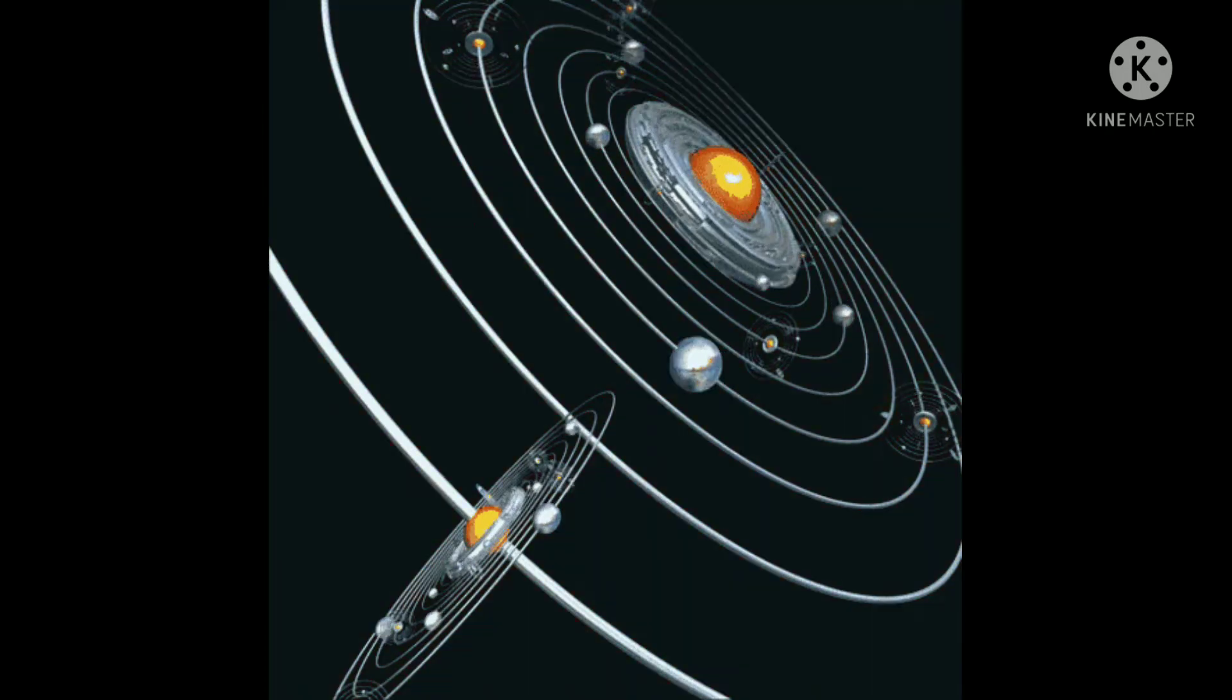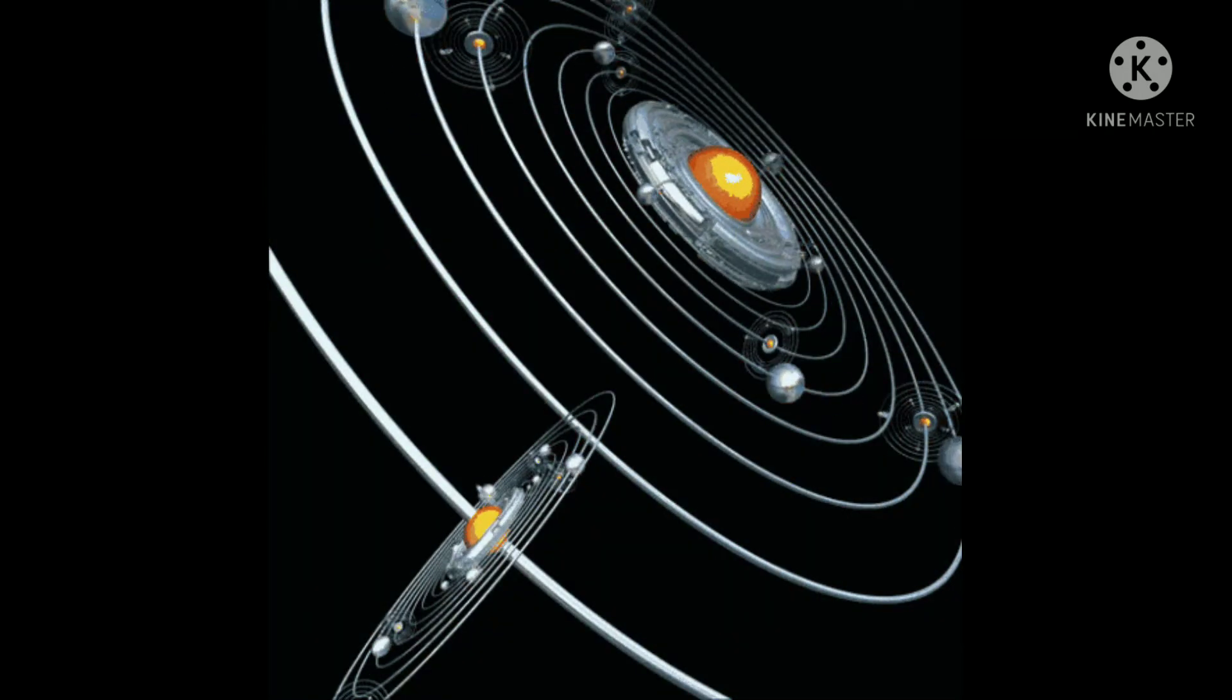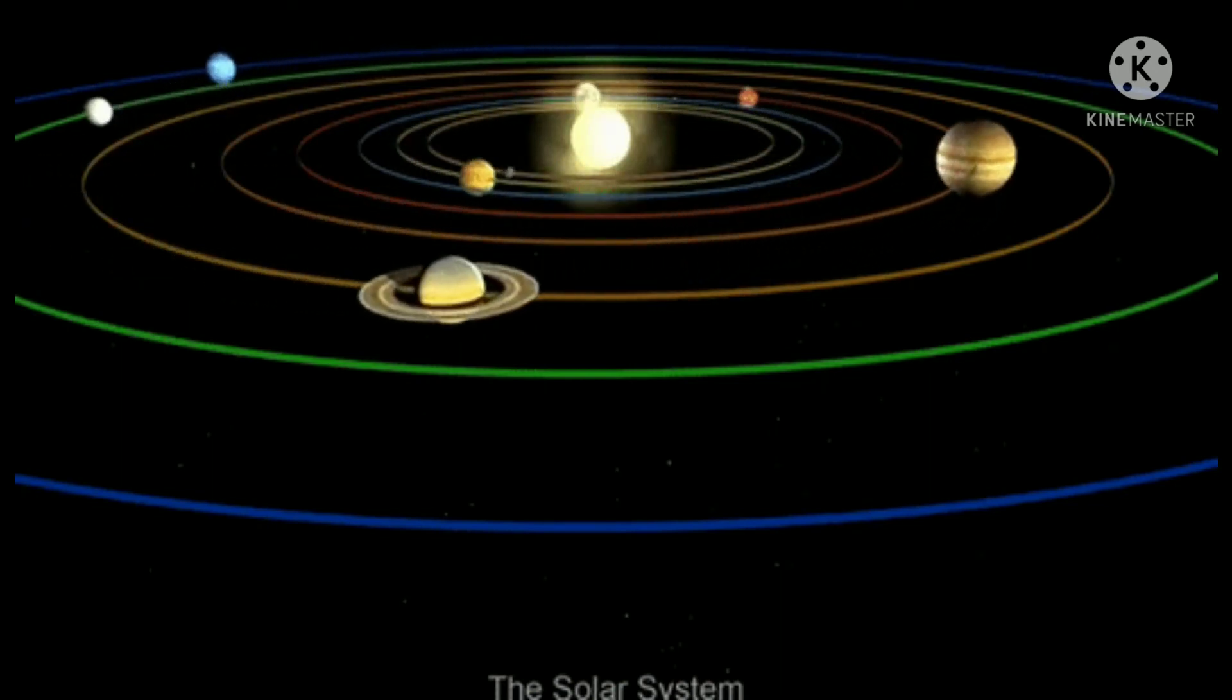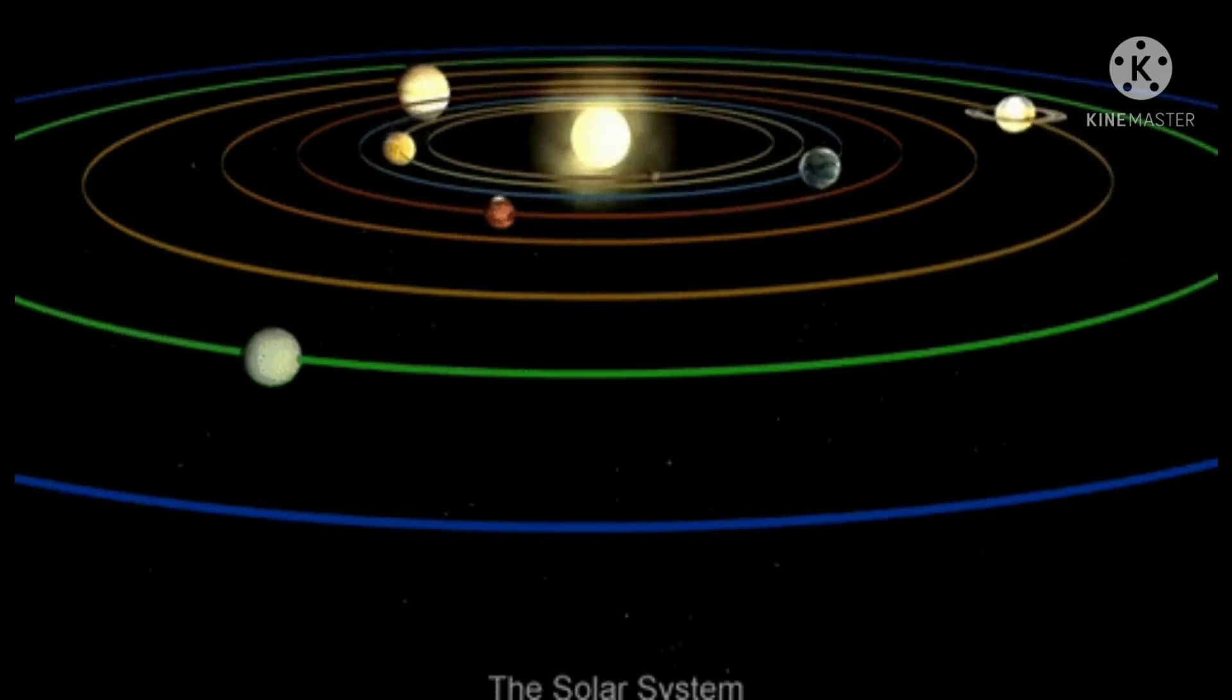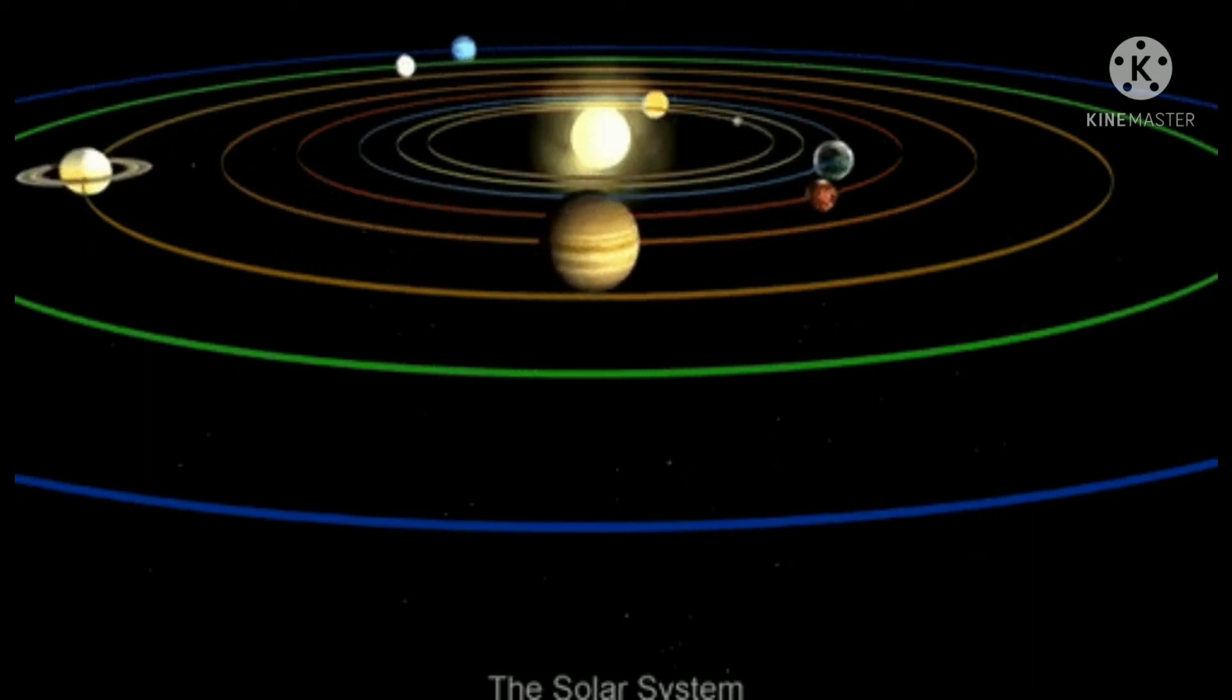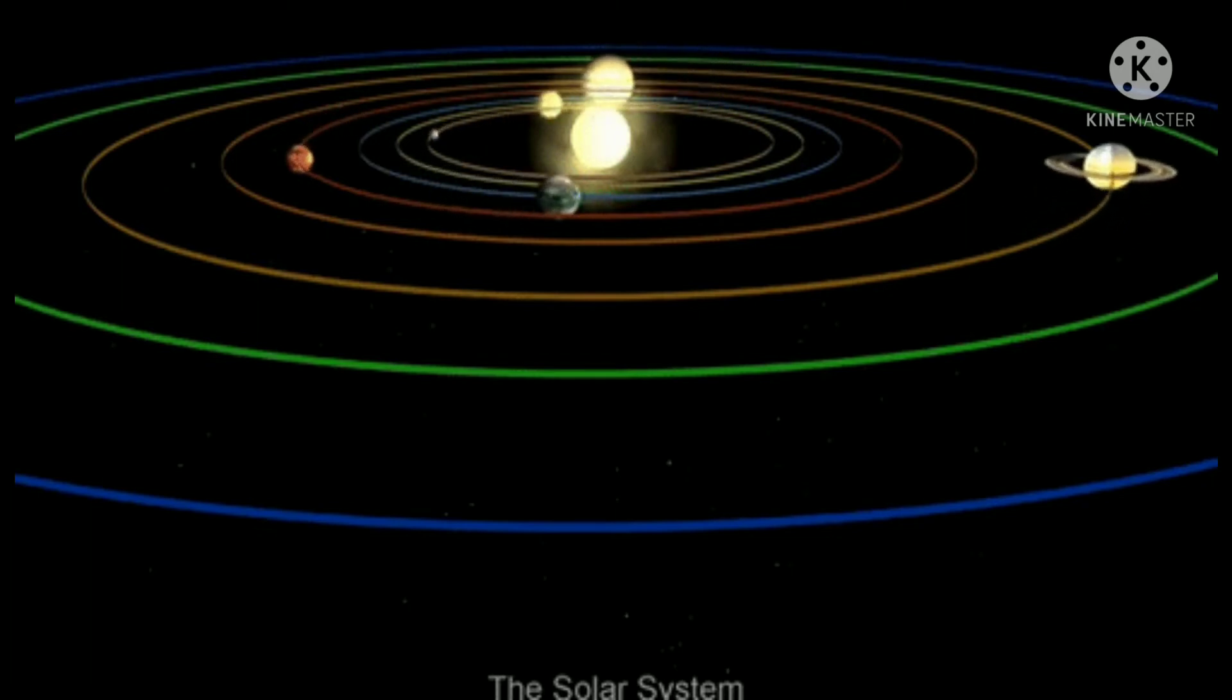The four giant planets of the outer system are substantially more massive than the terrestrial planets. The two largest planets, Jupiter and Saturn, are gas giants, being composed mainly of hydrogen and helium.